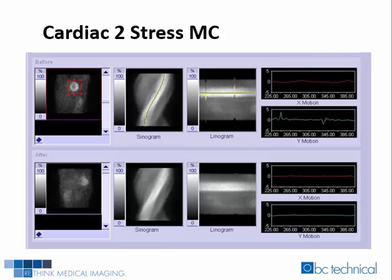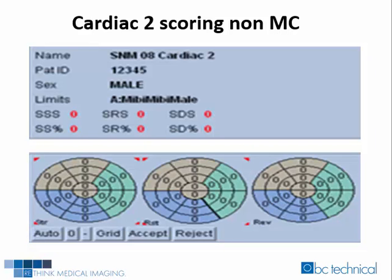For Cardiac I, the motion corrected dataset displayed the study with less than one pixel of motion — the same result as the non-motion corrected. Cardiac II's stress study showed greater than 3 pixels of motion before automatic motion correction was applied. The motion corrected dataset displayed a study with almost 0 pixels of motion, correcting 3 pixels of motion. The non-motion corrected quantitative scoring results were: summed stress score equaled 0, summed rest score equaled 0, and summed difference score equaled 0.